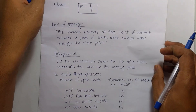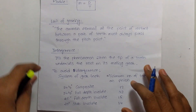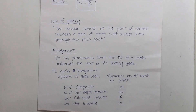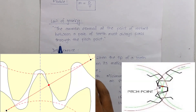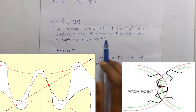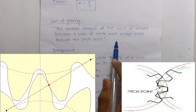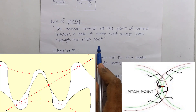The law of gearing states that the common normal at the point of contact between a pair of teeth must always pass through the pitch point.